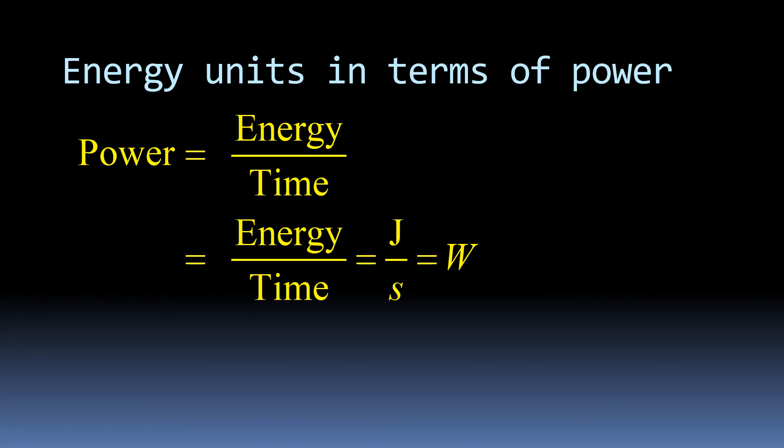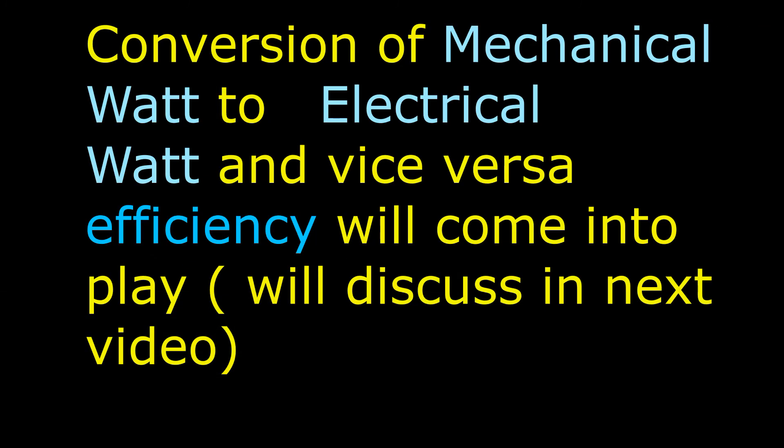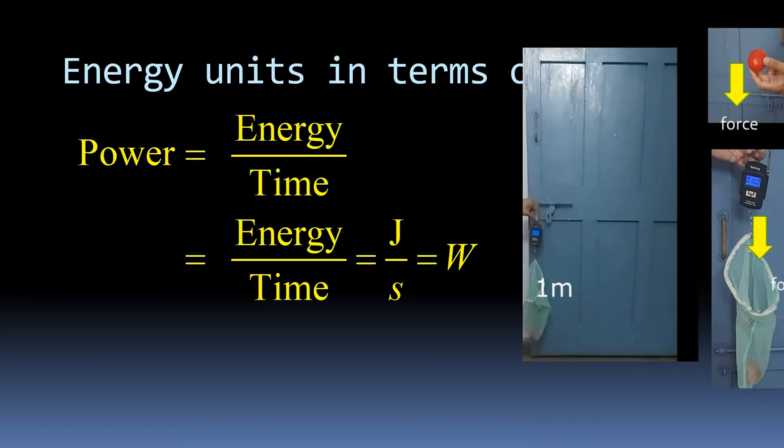Remember, we spent 1 joule of energy when we moved the tomato for 1 meter of distance. If we do the entire process of moving a tomato for 1 meter distance in 1 second, that is 1 Watt of power. Now, if you find expression for energy, energy will be power into time. Units can be Watt second and Watt second is nothing but joules.